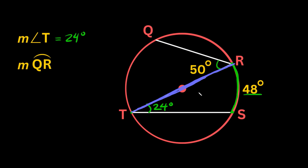Since the diameter cuts the circle in half and half of 360 is 180, if we're looking for arc QR it's helpful to first find the arc from Q to T. We can find that using the inscribed angle: since the angle is 50 degrees and arcs are twice as big as their inscribed angles, that arc is 100 degrees. So if that arc is 100, then the other arc from Q to R must be 80 degrees.